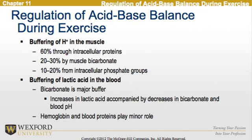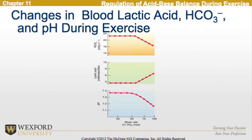Continuing to look at acid-base regulation during exercise, we see buffering of hydrogen ions in the muscle: 60% occurs through intracellular proteins, while 20% to 30% occurs by muscle bicarbonate, and the remaining 10% to 20% is done through intracellular phosphate groups. For buffering of lactic acid in the blood, bicarbonate is the major buffer. Increases in lactic acid are accompanied by a decrease in bicarbonate and blood pH. Hemoglobin and blood proteins may play a minor role. Charts below represent changes in blood lactic acid, bicarbonate, and pH during exercise.